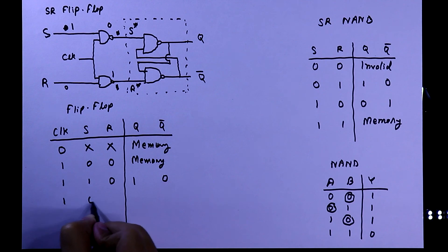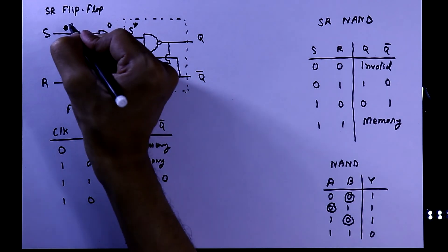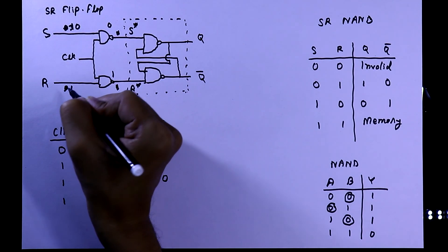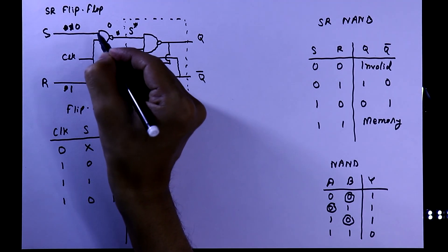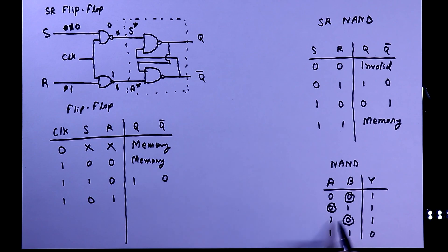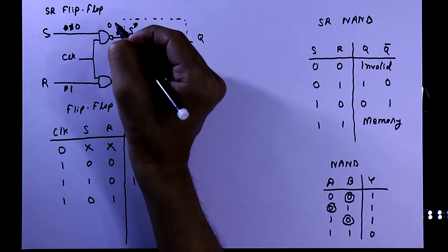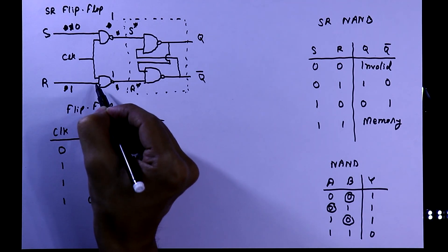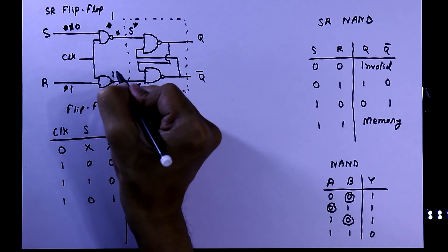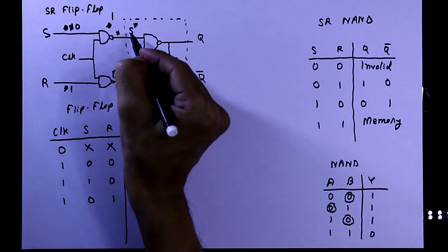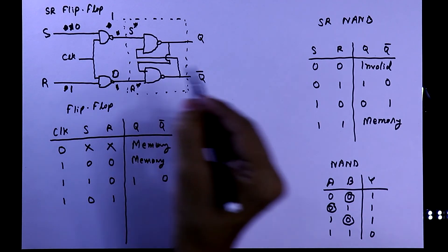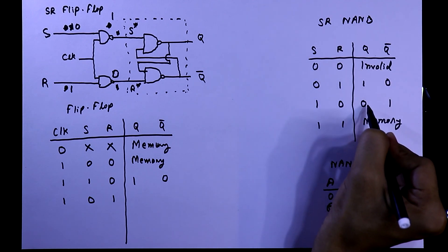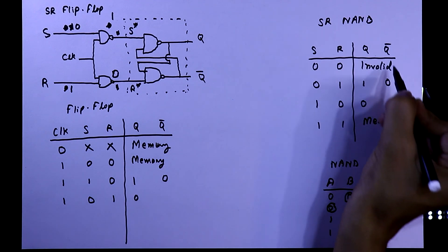Clock is one, S is zero, R is one. One input is one and the other input is zero, so one-zero gives one in the output. For the other NAND gate, both inputs are one, so we will get zero. If S is one and R is zero, then Q equals zero and Q-bar equals one.